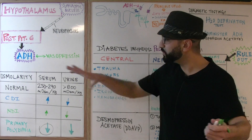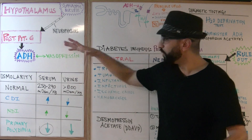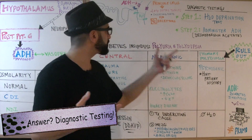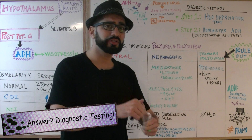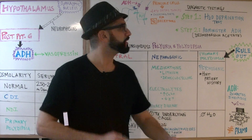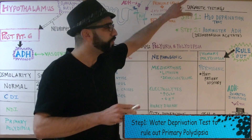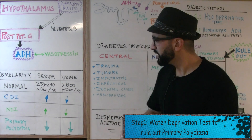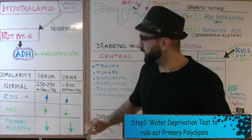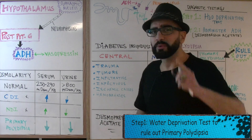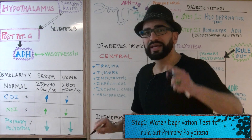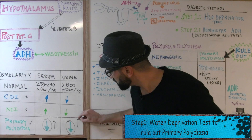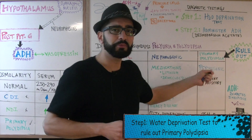Now we've got osmolality data for all three conditions. The diagnostic tests become very important since all three share the same symptoms. The first step is the water deprivation test — withhold water. It won't affect the CDI patient or the NDI patient, but it will affect the primary polydipsia patient. Their values will start to normalize: serum osmolality levels will increase and urine osmolality levels will increase. That rules out primary polydipsia — the patient with an underlying psychiatric issue.